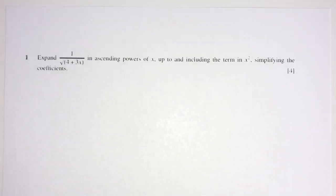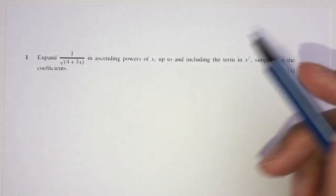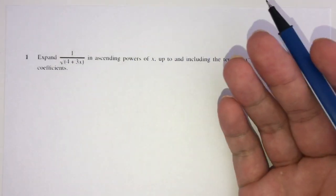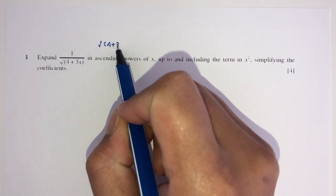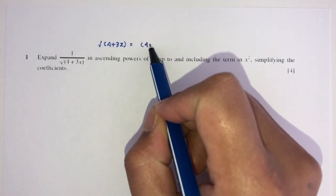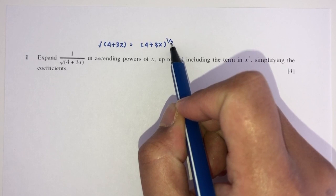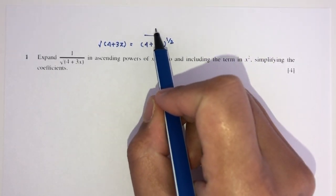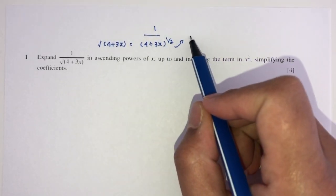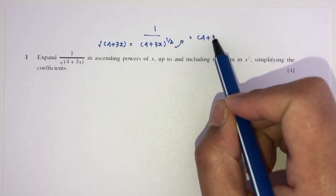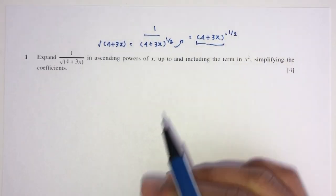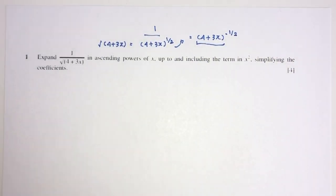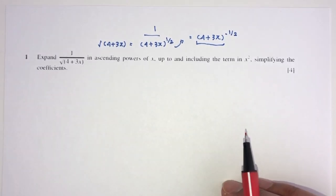Here we have question number 1. We have to expand this thing in ascending powers of x up to the term in x squared. One by one, we first have to simplify this. What is square root of 4 plus 3x? It is the same thing as saying 4 plus 3x to the power half. When you have 1 over this, if you bring this up, you will have 4 plus 3x power minus half. We were able to change this into this form.